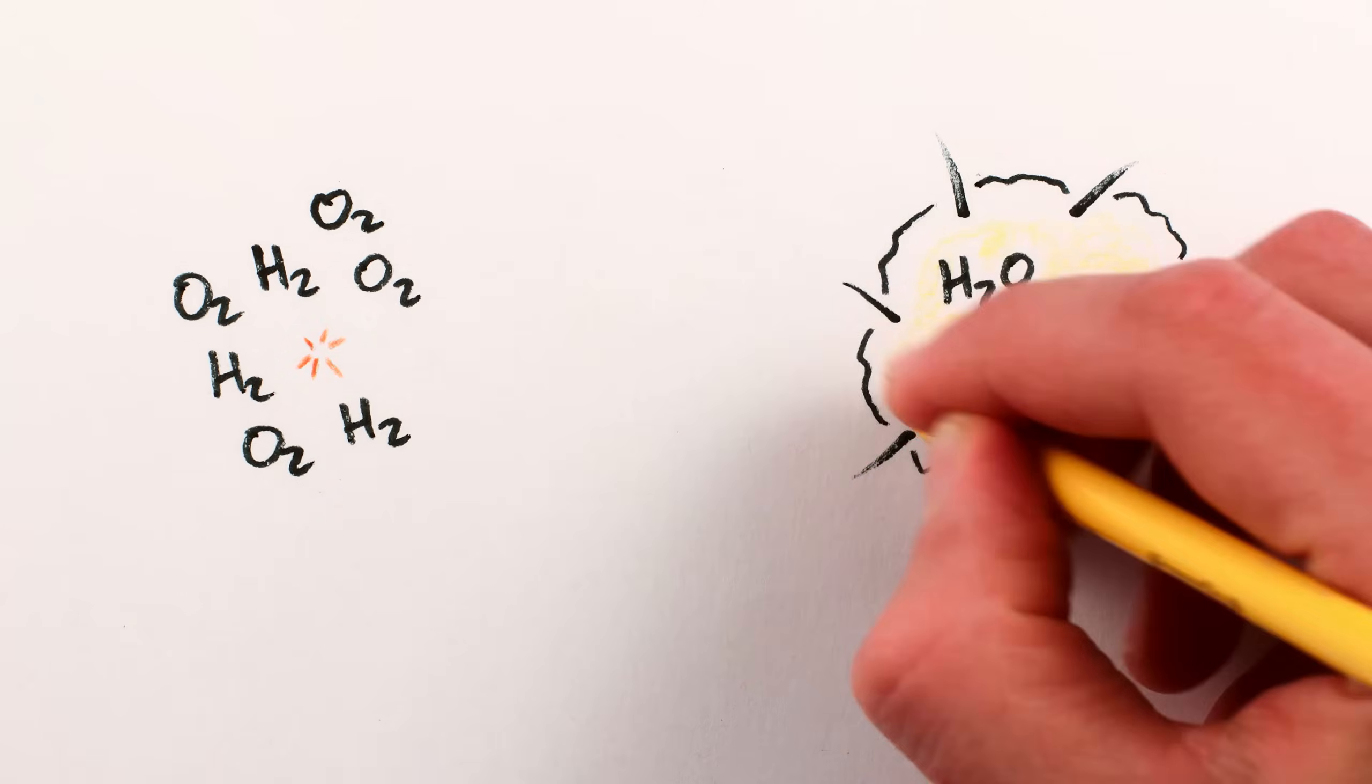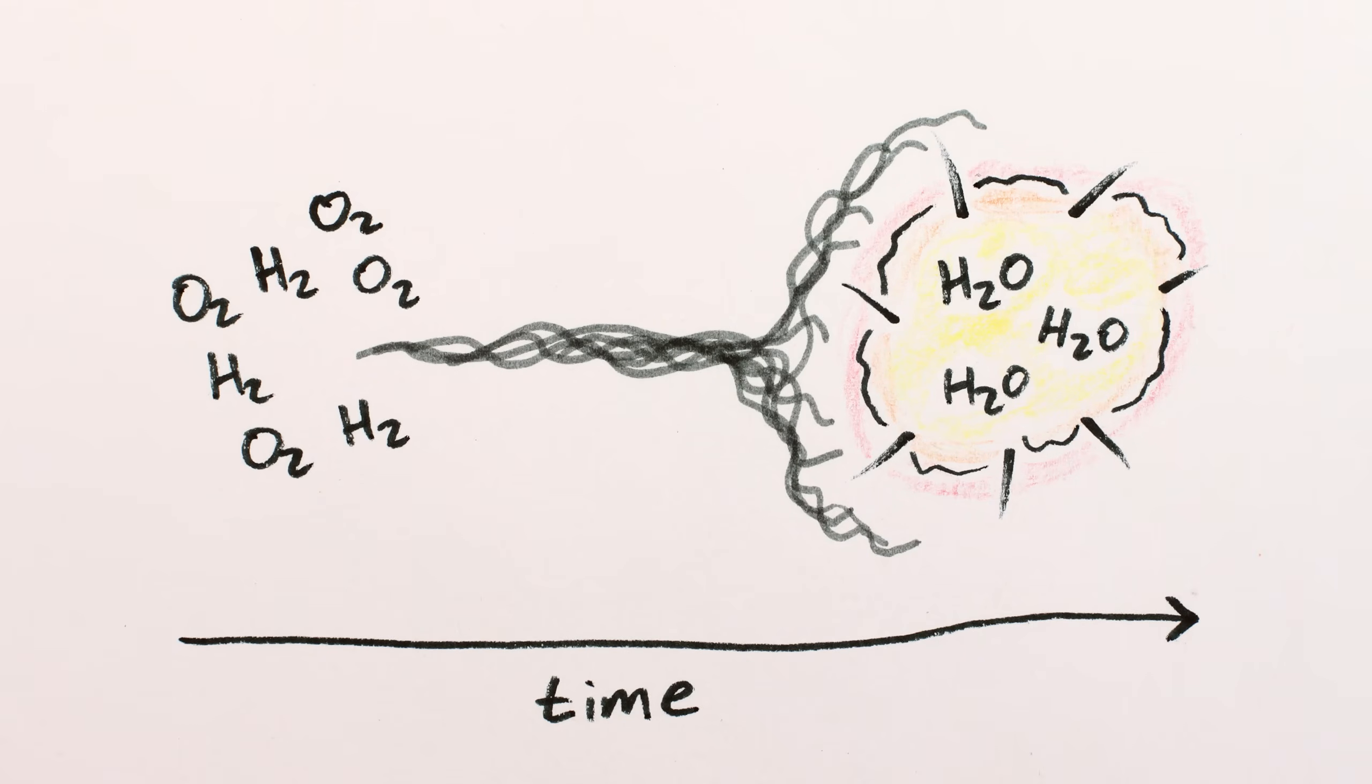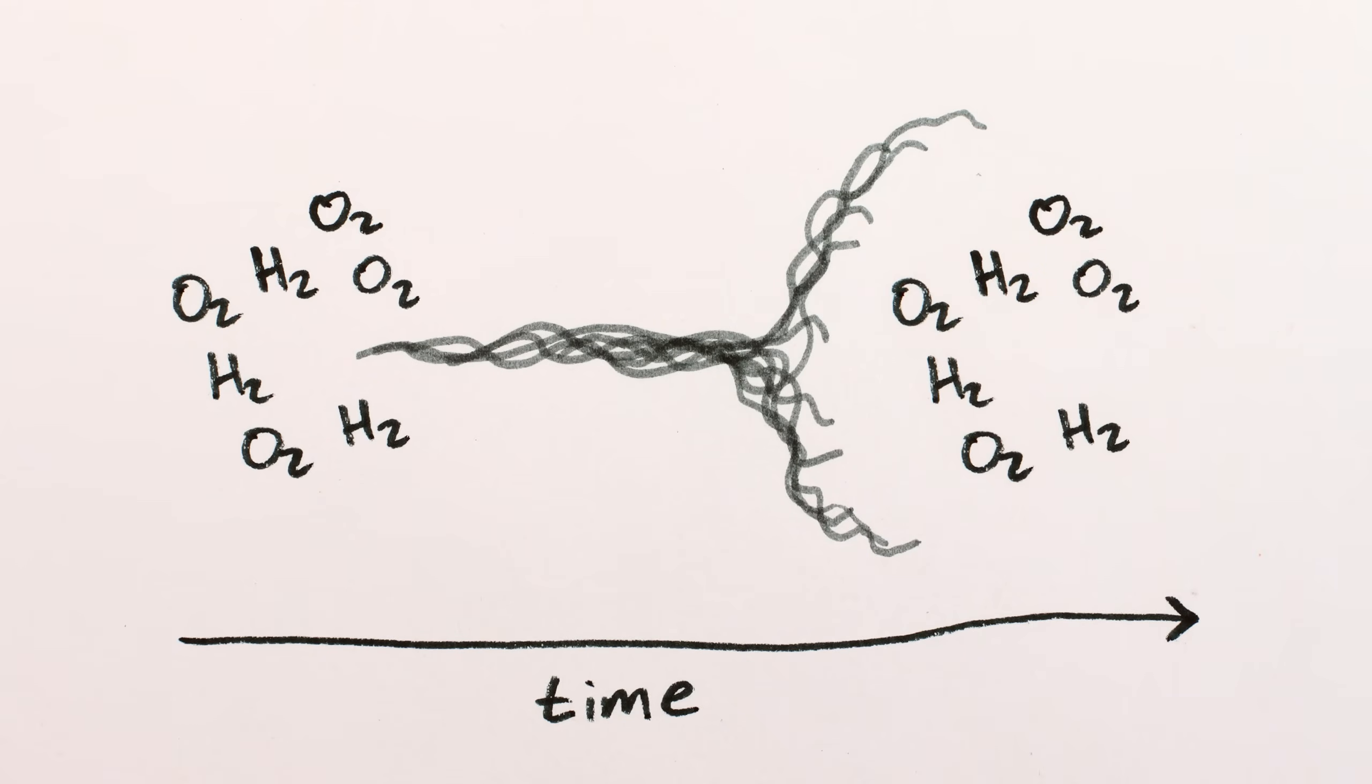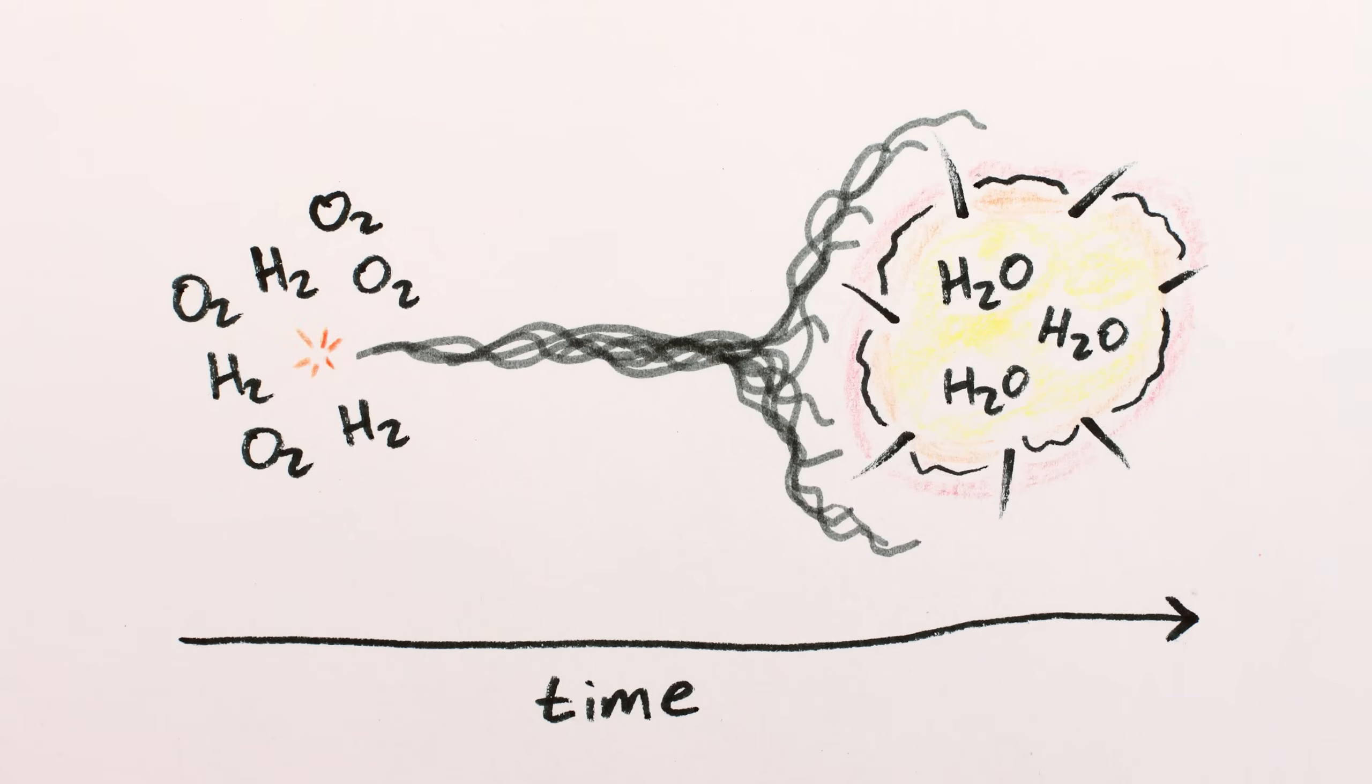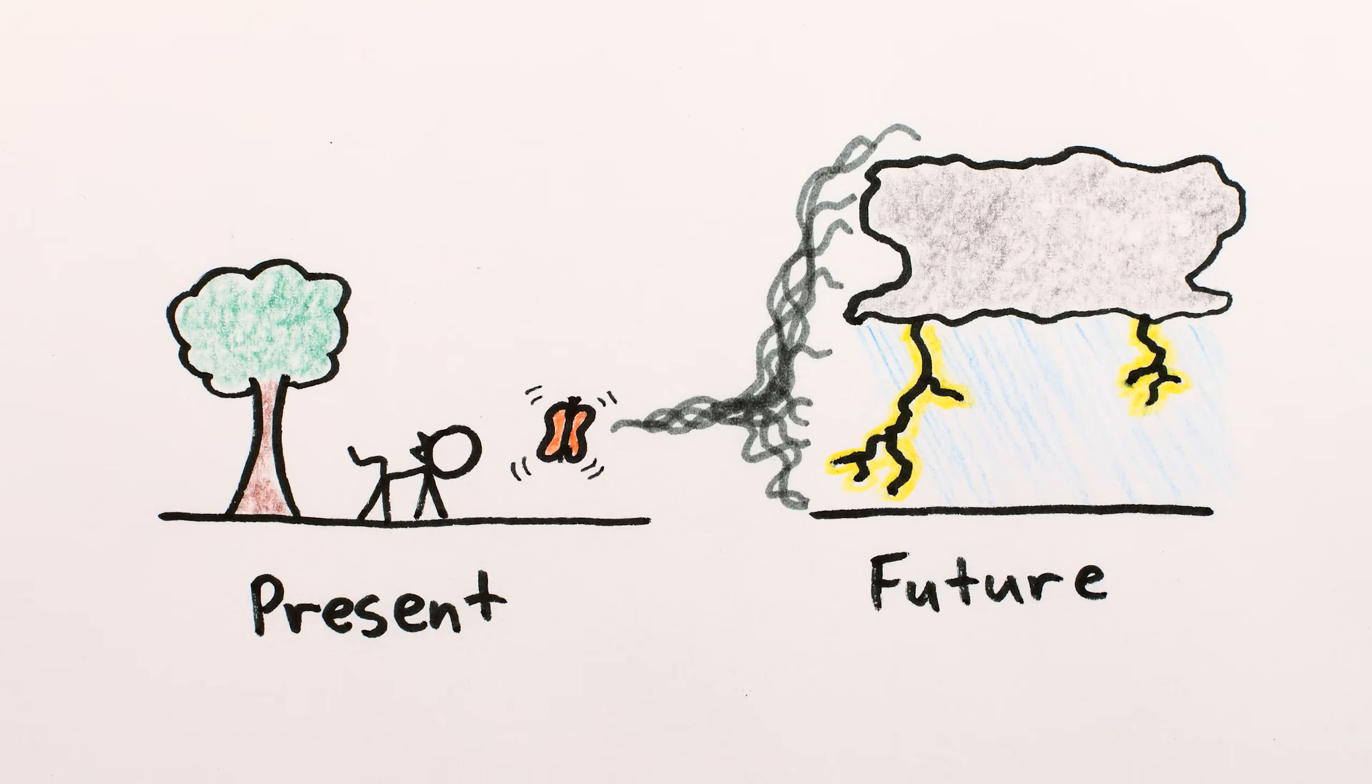One way of thinking about causes is that the tiny spark has great leverage over the future. If you hadn't lit the spark, we wouldn't have seen a giant explosion. It doesn't work the other way. Removing or changing a tiny part of the giant explosion doesn't imply that there wasn't a preceding spark. When a small change to the present implies a big change to the future, the small thing we're changing is generally thought of as a cause.